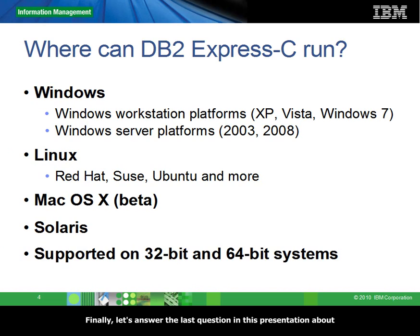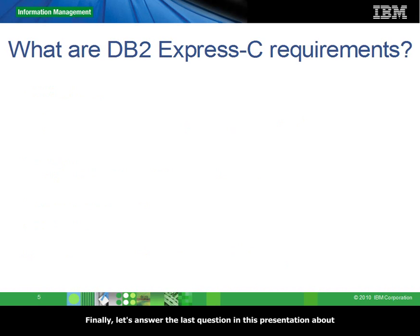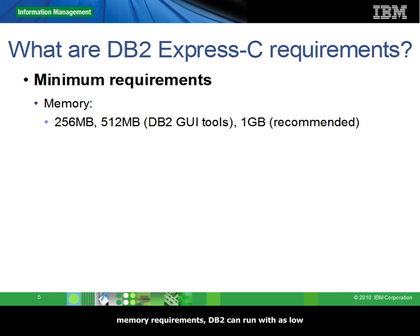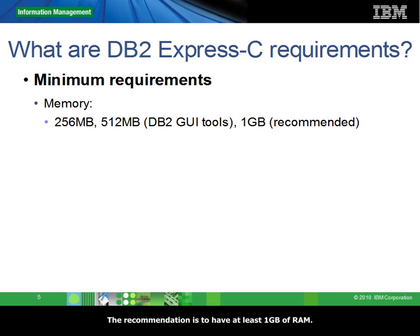Finally, let's answer the last question about what are DB2Express-C requirements. DB2 can be installed in most systems today. In terms of minimum memory requirements, DB2Express-C can run with as low as 256 MB. If using DB2Express-C graphical tools, you need at least 512 MB. The recommendation is to have at least 1 GB of RAM.